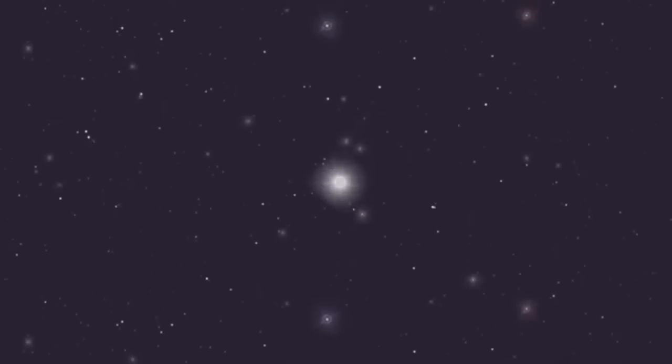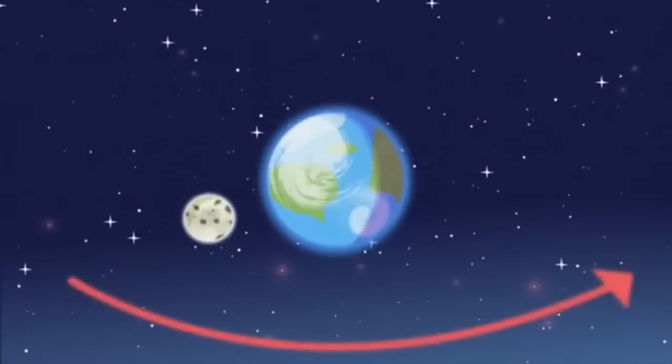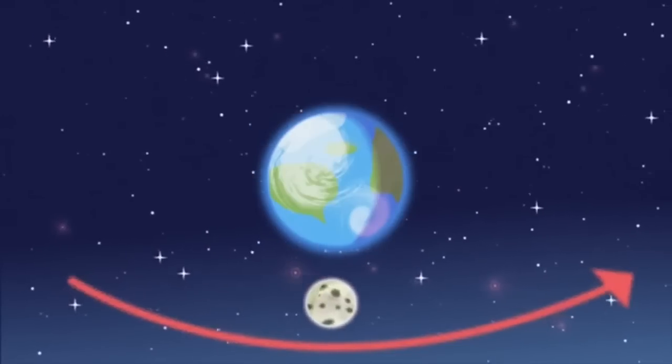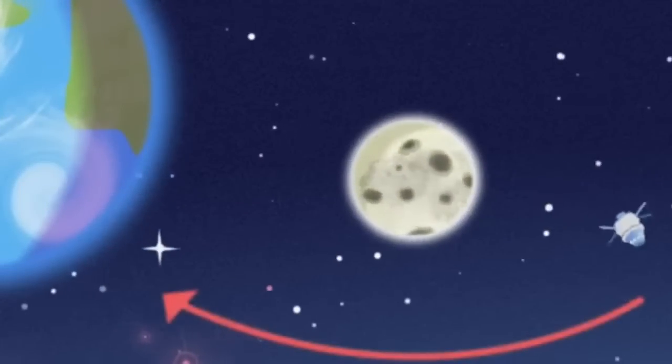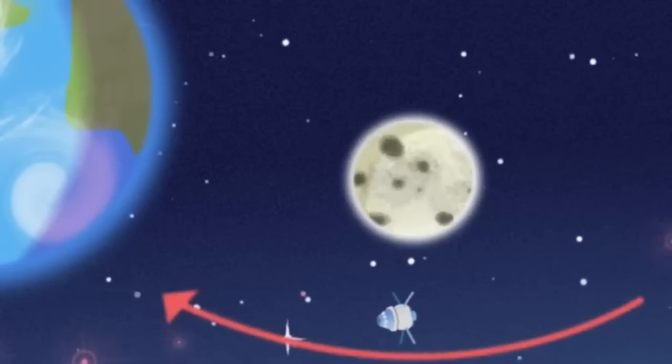The orbit is called Distant because Orion will be orbiting very high above the Moon's surface. Retrograde is just a fancy word for opposite. The Moon travels around the Earth in one direction. Orion will go around the Moon in the opposite direction.